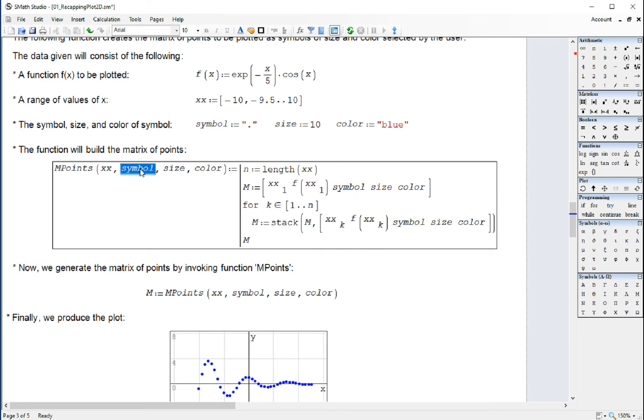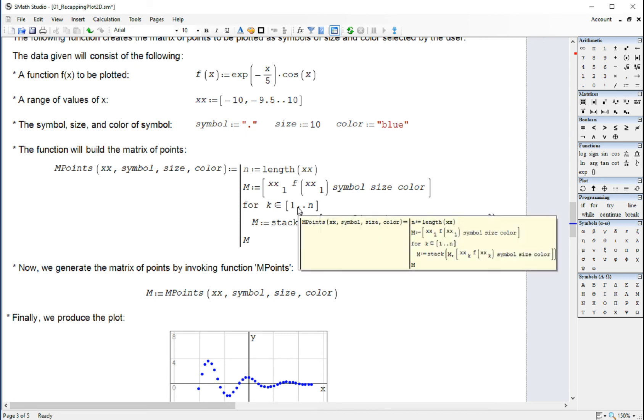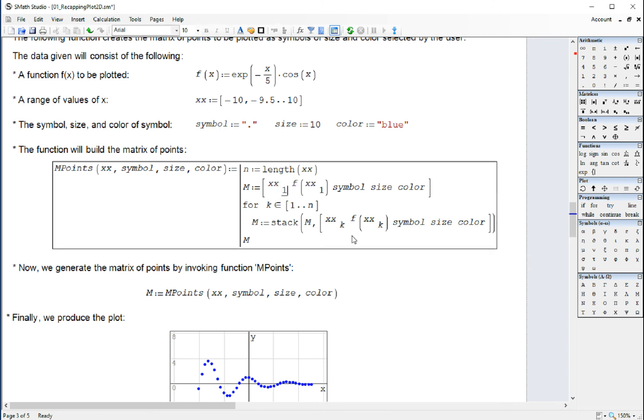Get the length of X to see how many points we're going to create. Then create a matrix starting with a single row corresponding to the very first point. And then we're going to add the points again from 1 to n, stacking the existing point with X of 1 again.